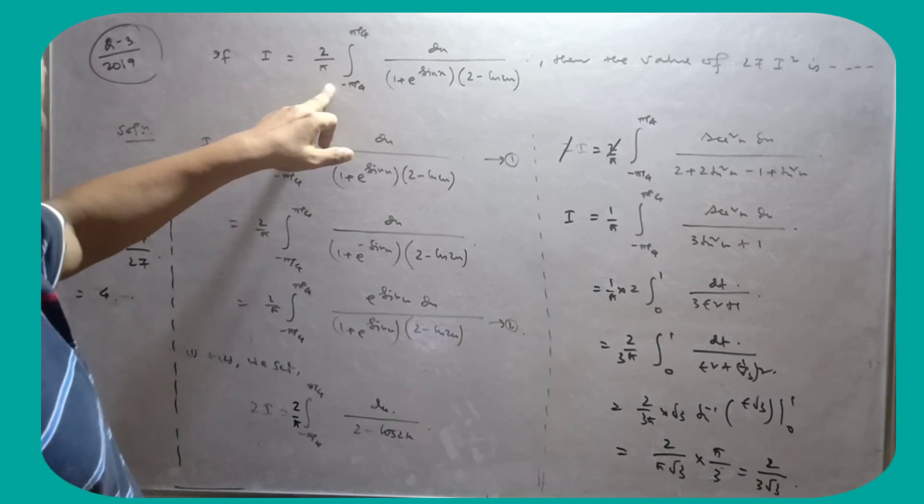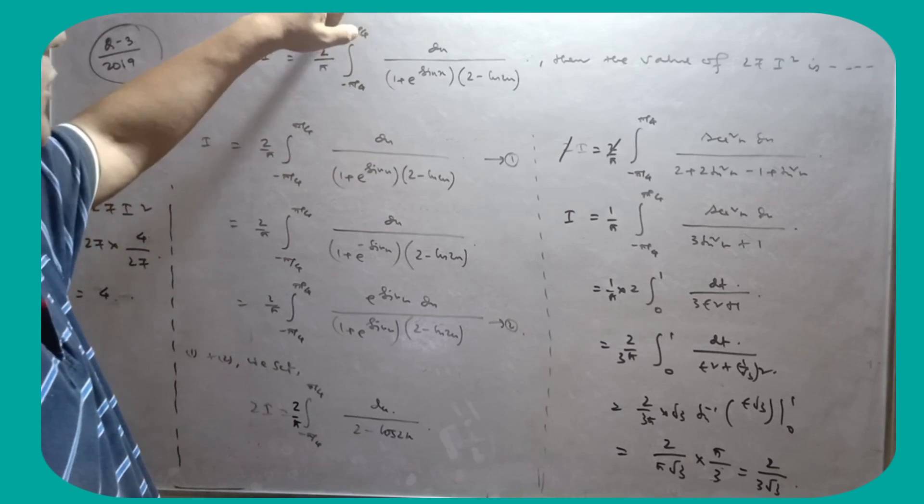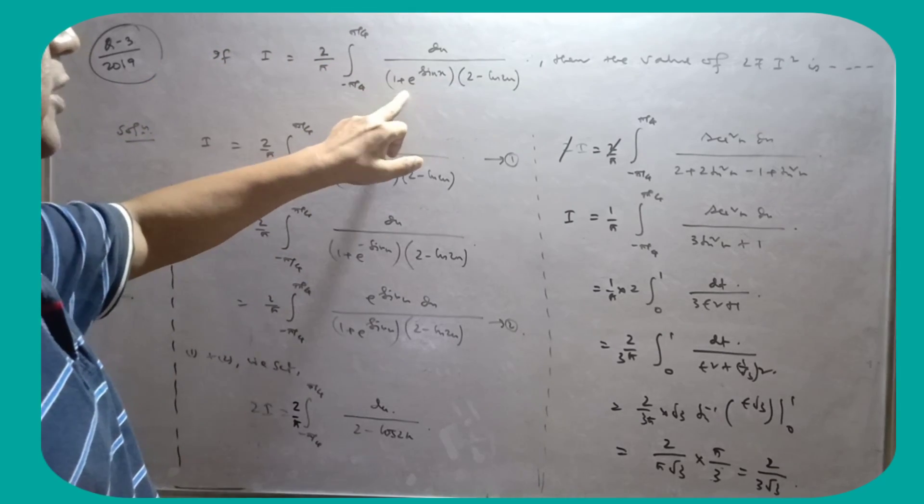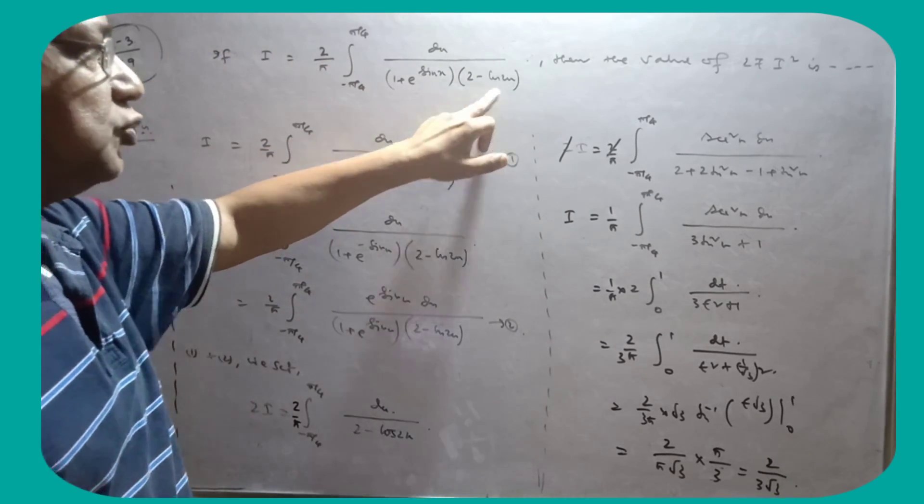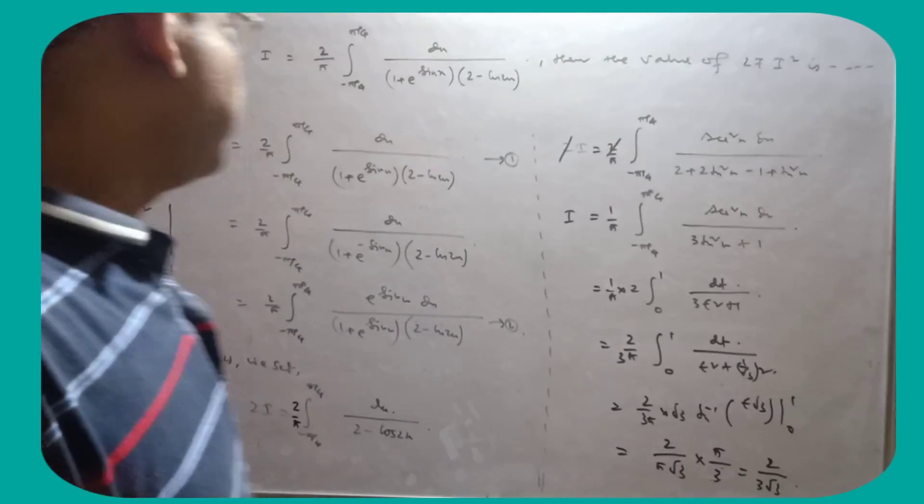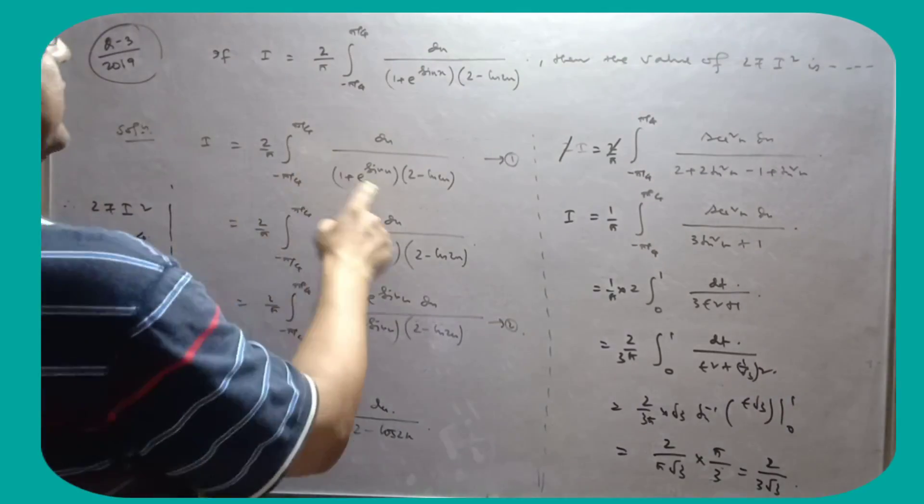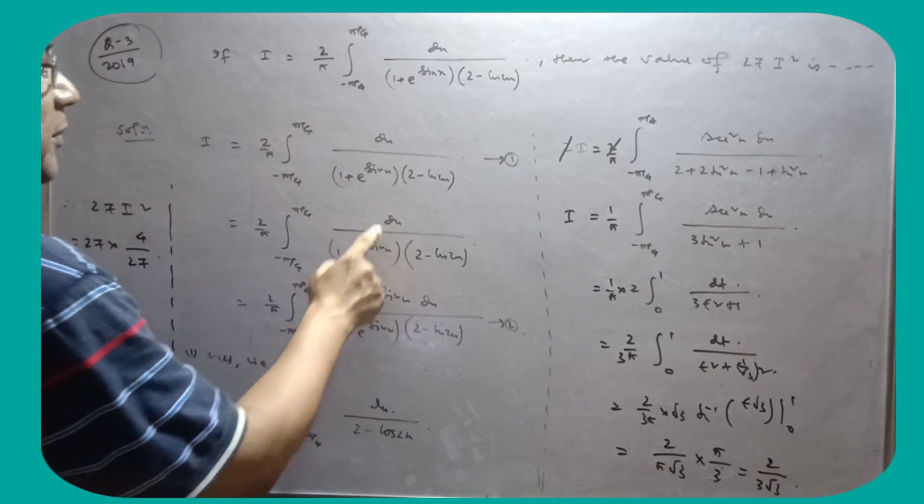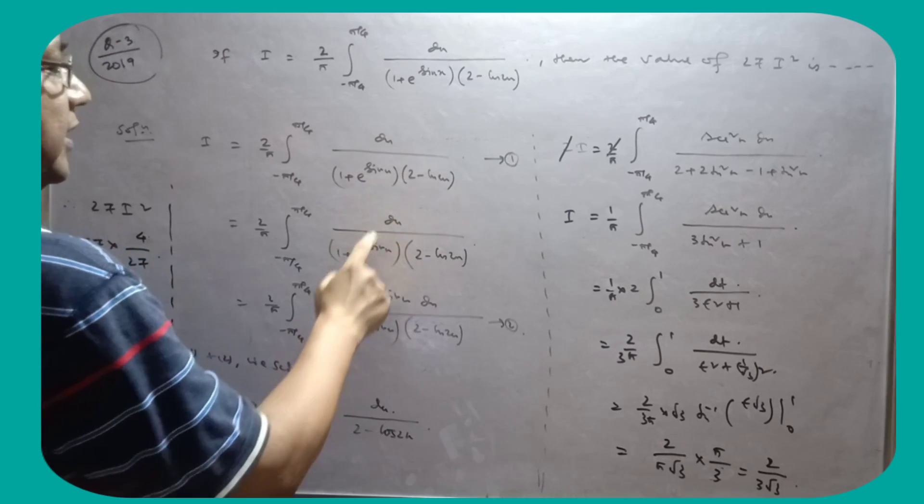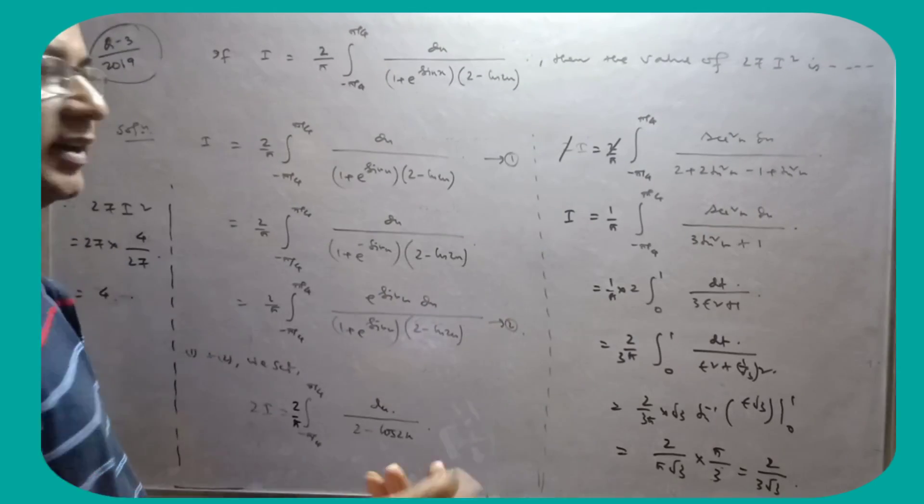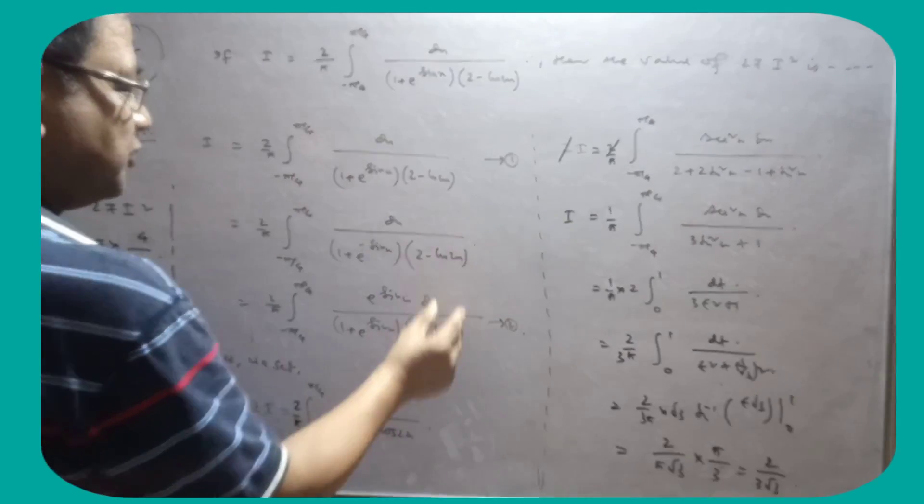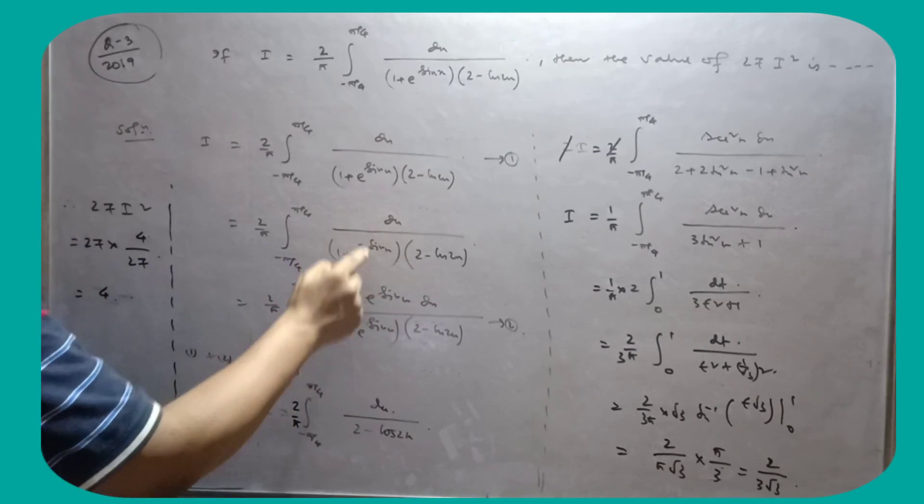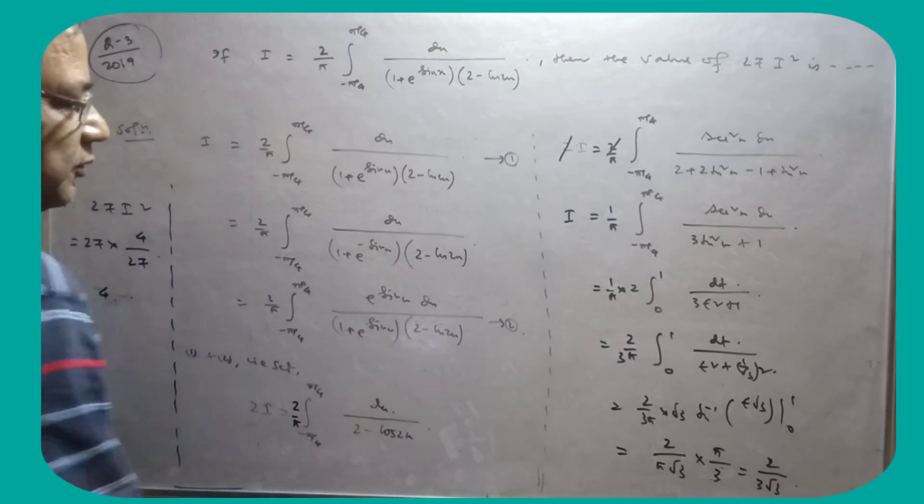If i is equal to 2 by pi minus pi by 4 se pi by 4 dx by 1 plus e to the power sin x, 2 minus cos 2x, then the value of 27 i square is. 2 by pi this. Yeh pe mahi king property ko apply kya x ka jaga pe minus x likho. Sin of minus x minus sin x, then cos of minus x to cos x hai. Isse liye kuch change nahi hoga. Ee numerator sin x upon each multiply kar du, you will get this.